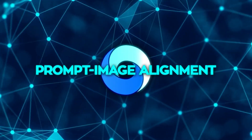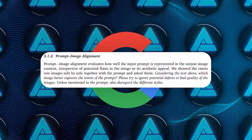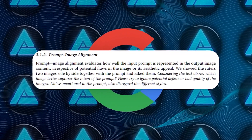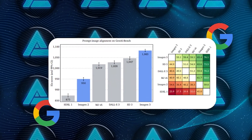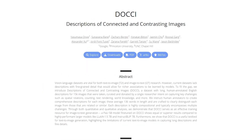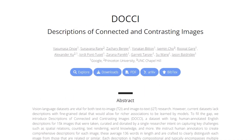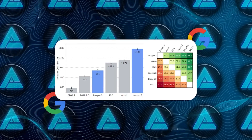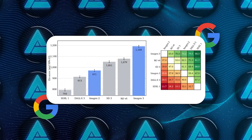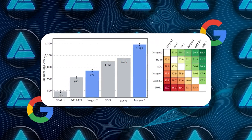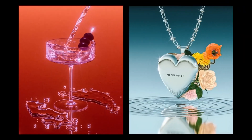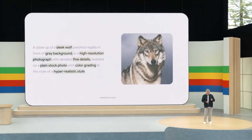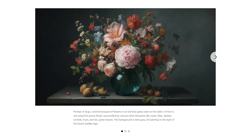Then there's prompt-image alignment, which measures how accurately the image matches the text prompt, ignoring any flaws or differences in style. Here again, Imagen 3 came out on top, especially when the prompts were more detailed or complex. For example, when they used prompts from a set called DoCCI, which includes very detailed descriptions, Imagen 3 showed a significant lead — a gap of +114 ELO points and a 63% win rate against the second best model. That shows Imagen 3 is really good at sticking to the specifics of what you ask for.